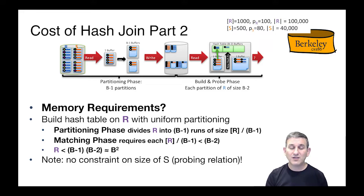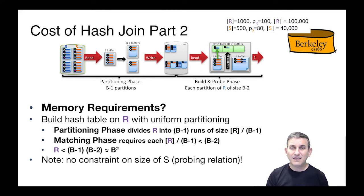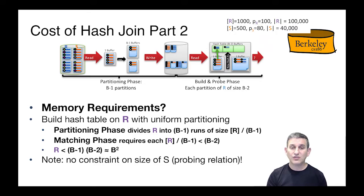For that to be true, |R| must be less than (B - 1) times (B - 2), or roughly B squared — as we knew from our external hashing algorithm. Importantly, as in naive hash join, there's no constraint on the size of S. So if you have a gigantic S and a small R, hash join is a great algorithm, because sort-merge join would have to sort both S and R, whereas hash join only has to hash R. S can just be scanned, partitioned, and re-read — no recursive partitioning of S required.